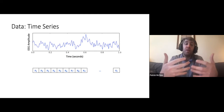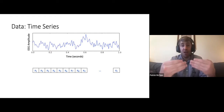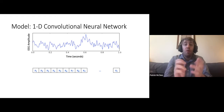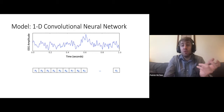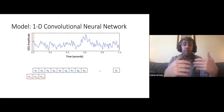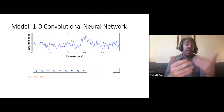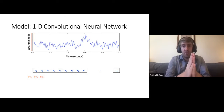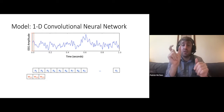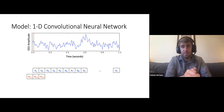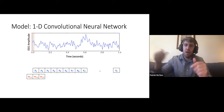What we can do with convolutional neural networks is take advantage of this structure in the data. In this example, we're going to look at a convolutional neural network that takes into consideration the previous time point, the time point we're looking at, and the next time point. You can use filters of greater sizes, as is often done in convolutional networks. Here we're looking at a 1D convolutional network, moving a size-three filter through the data in one dimension — the time dimension.